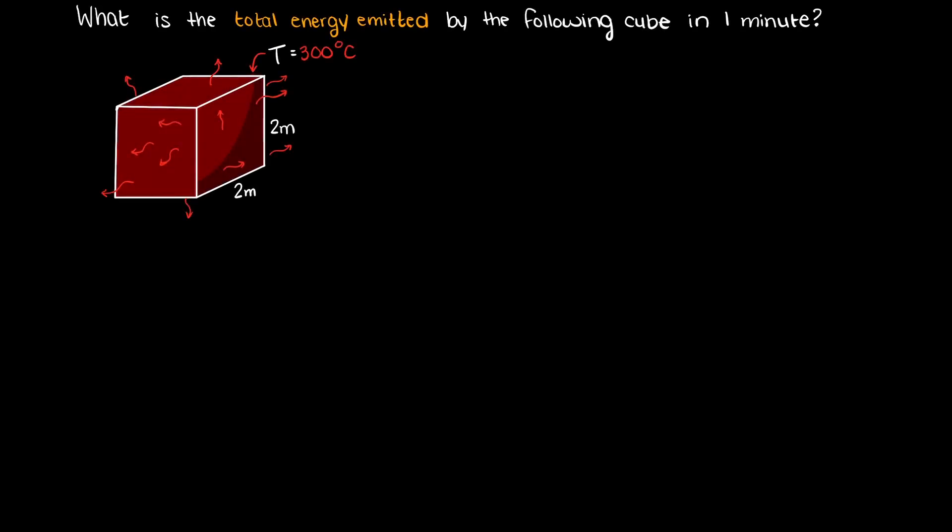We are asked to solve for the total amount of energy that this cube is emitting every minute. The cube has side lengths of 2 meters each and the cube is at a temperature of 300 degrees Celsius. We can assume that the cube is a perfect black body, meaning our emissivity of this body is simply 1.